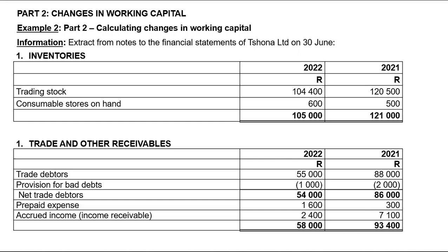Today I will be doing Part 2, which is a continuation of the previous video on cash flow statement. We've got changes in working capital, which is the bottom part of your note number one — cash generated from operations — for the cash flow statement. It's just a continuation of Example 1 from the previous video on introduction to the cash flow statement. In Part 2, we will simply be calculating changes in working capital.